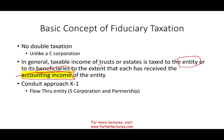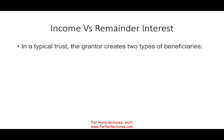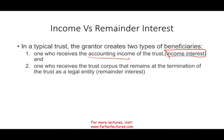We need to understand a couple of terms: income interest and remainder interest. When assets are placed in the trust — bonds generating interest, stocks generating dividends, buildings generating rent — the trust has income. Some beneficiaries receive this accounting income; they hold the income interest. At some point, other beneficiaries will receive the corpus — the principal — which is the stocks, bonds, and buildings themselves, at the termination of the trust. Those who receive the principal hold the remainder interest. Make sure you are familiar with these two terms.